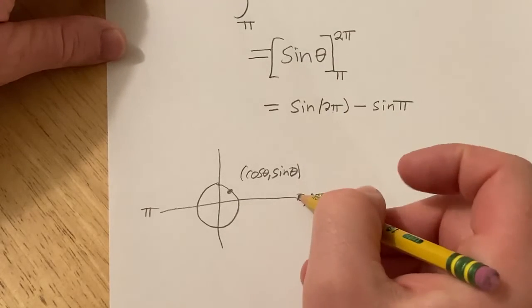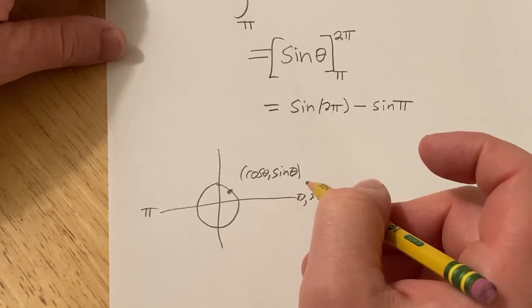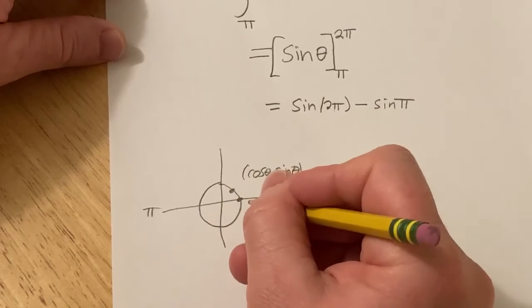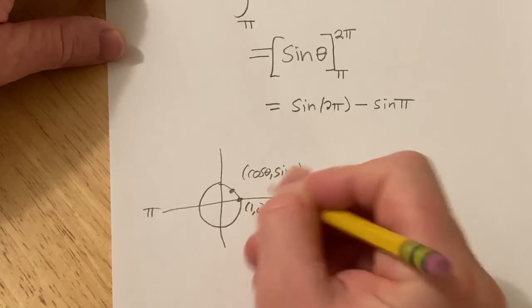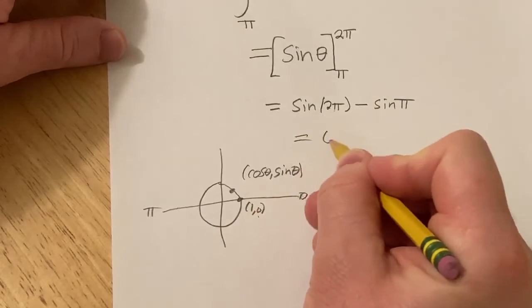So the y coordinate at 2pi is going to be sine. So this point here, this is the unit circle, is 1, 0. So the y coordinate is 0. So that's 0, minus.